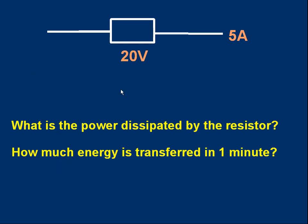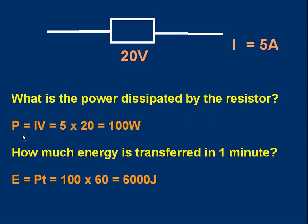Let's look at a problem. 20 volts applied across a resistor, 5 amps going through the resistor. What is the power dissipated by the resistor, and how much energy is transferred in one minute? P is IV, it's 5 amps times 20 volts, 100 watts. Energy is power times time, 100 watts times 60 seconds, 6000 joules. Fairly straightforward.